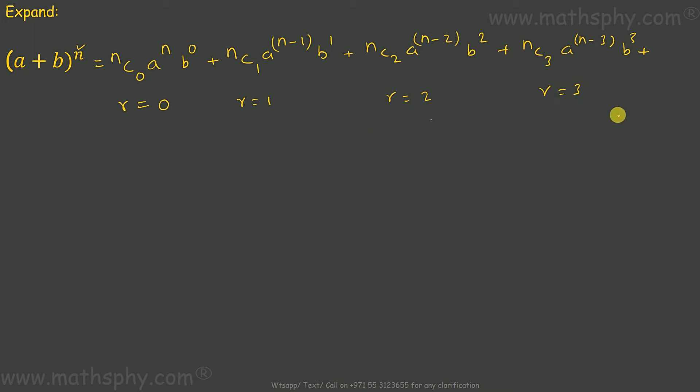r will keep on going till the time it touches n or it becomes n or r goes equal to n. Now, when r is 0, we take n c 0, a raised to n. a raised to n can be written also as a raised to n minus 0. It means n c 0 or n c r, a raised to n or a raised to n minus 0 or a raised to n minus r, b raised to 0 or b raised to r, because r is equal to 0.